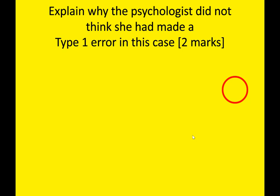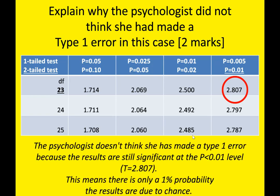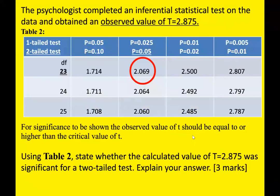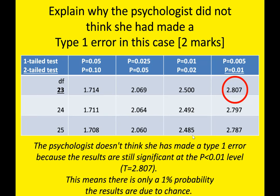Then you might get the classic exam question: 'Explain why the psychologist did not think she had made a Type 1 error in this case.' This is simply asking you to go back to the critical values table but instead of looking at p < 0.05, you look at the more stringent probability level of p = 0.01, which means there is a one percent probability the results are due to chance. You compare your calculated value of t to the critical value at that higher level. The answer is: the psychologist doesn't think she made a Type 1 error because the results are still significant at the p < 0.01 level — the critical value is t = 2.807, and our calculated value was t = 2.875, so 2.875 is still higher.